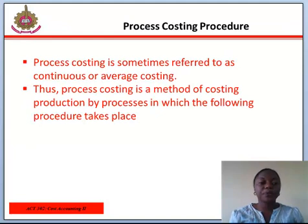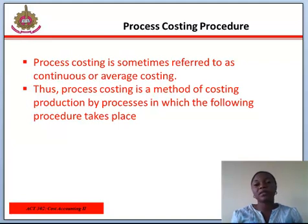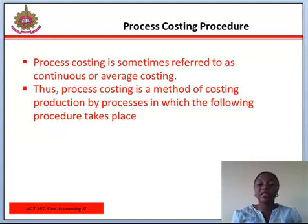Process costing procedure. Process costing is sometimes referred to as continuous or average costing. It is a method of costing production by processes in which: 1. The product of one process becomes the material of a subsequent process. 2. Different products and byproducts, if any, are produced simultaneously in the same process. 3. Products differing only in shape or form on completion are not separately distinguishable during one or more processes of manufacture. The cost of each process and cost per unit at each stage are usually shown by the account.